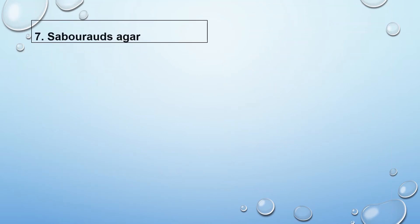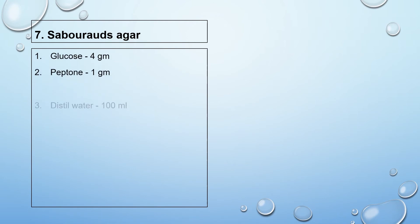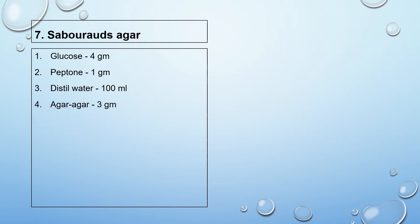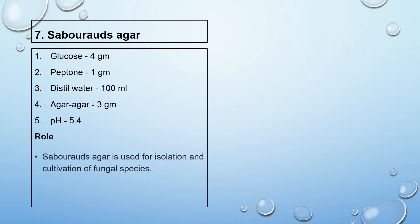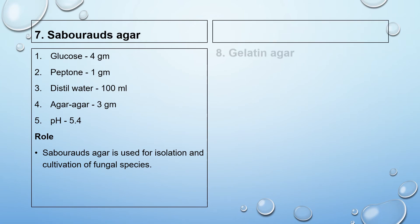The seventh media is Sabrot's agar. Composition: glucose 4 gram, peptone 1 gram, distilled water 100 ml, agar agar 3 gram, pH 5.4. Sabrot's agar is used for isolation and cultivation of fungal species.